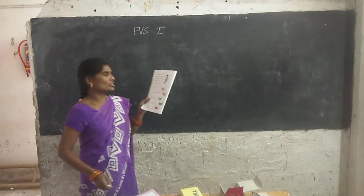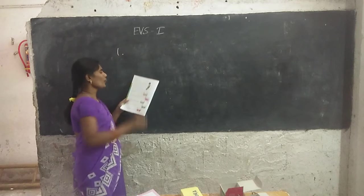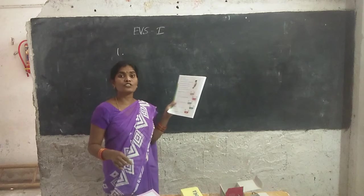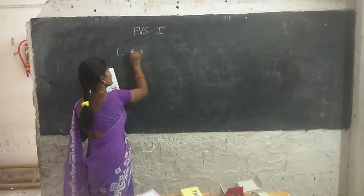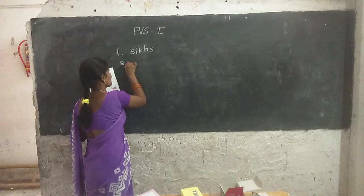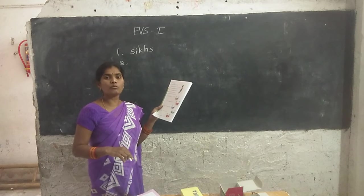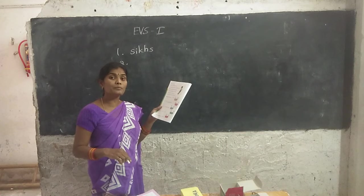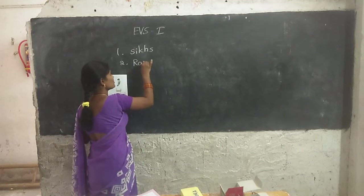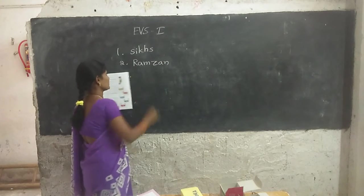Fill in the blanks with the help of the given words. Guru Parab is the festival of Sikhs. Eid is the festival of Muslims — the answer is Ramzan.